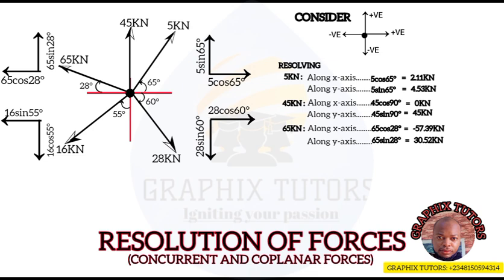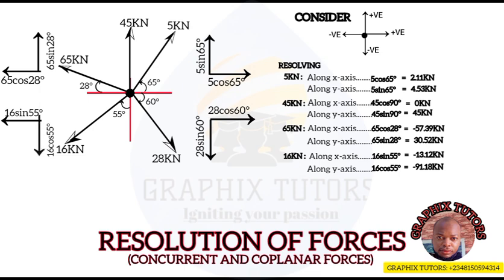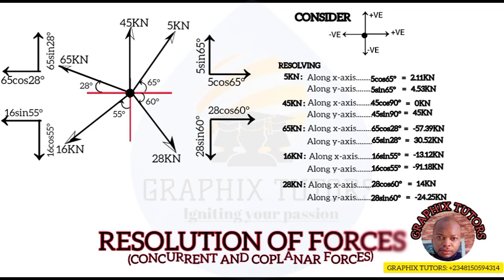For the 16 kilonewton: along the x-axis, 16 sin 55 = −13.106 kilonewton (negative because it faces west). Along the y-axis, 16 cos 55 = −9.18 kilonewton (negative because it faces downward). For the 28 kilonewton: along the x-axis, 28 cos 60 = 14 kilonewton (positive, facing right); along the y-axis, 28 sin 60 = −24.25 kilonewton (negative, facing downward).